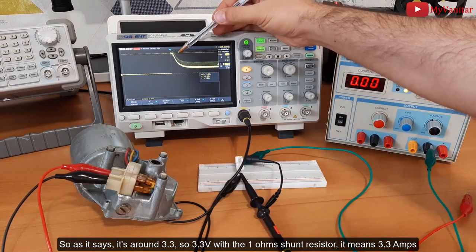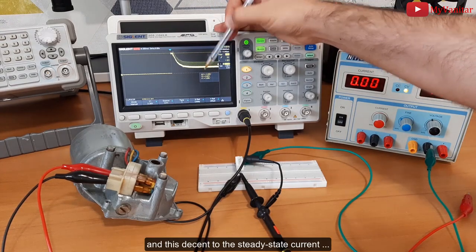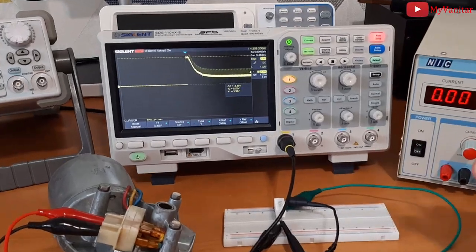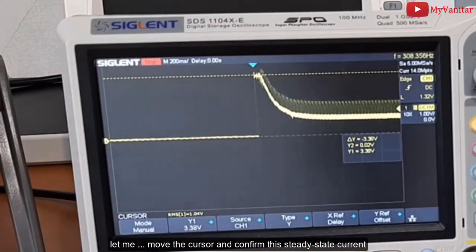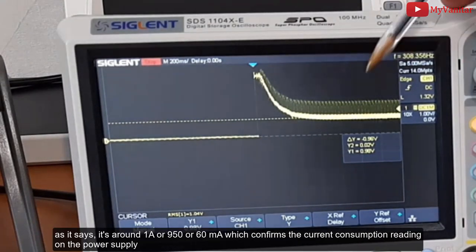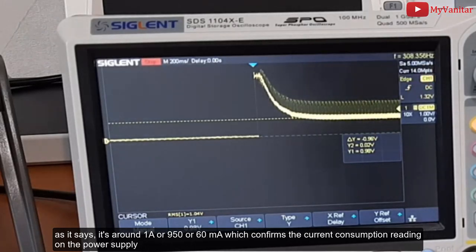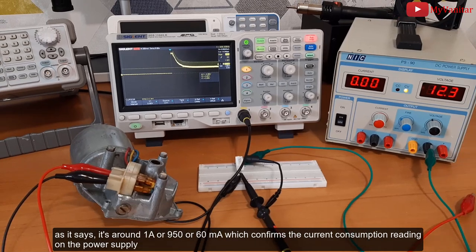means 3.3 amps. And this descent to the steady state current... let me move the cursor and confirm this steady state current. As it says, it's around 1 amp or 950 or 960 milliamp, which confirms the current consumption reading on the power supply. To solve this problem, I have introduced two designs - one for the AC loads